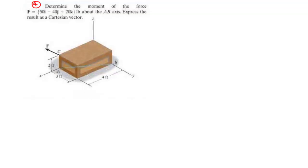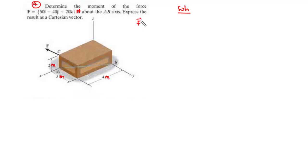Let's move on to Question 4: Determine the moment of the force F = 50i minus 40j plus 20k newtons about the AB axis, and express the result as a Cartesian vector. We note the force in newtons and the distances along the x, y, z axes in meters. The force is given as a vector: 50i minus 40j plus 20k.